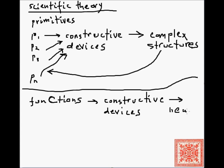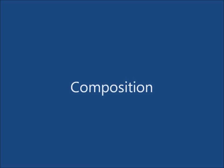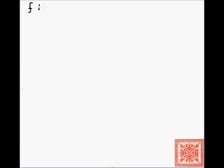Composition is one of those constructive devices that we can use — we can borrow it from mathematics because composition is well defined in mathematics — and we can start using it and proving interesting computational properties of composition. So what's the formal definition of composition? Let's say that f is a function of k arguments, or k variables.